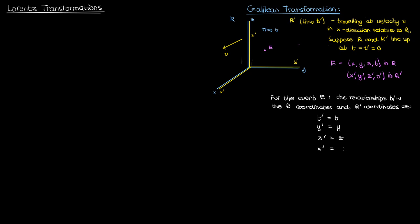The x coordinate of this event however is different between the two reference frames because r' is traveling at a velocity of v in the x direction. So the x' coordinate in the r' frame is going backwards after starting from a point where it was lined up with x, going backwards at the speed v. So we can say that x' equals x minus vt. These four equations comprise the Galilean transformation, which allows us to transform coordinates between two reference frames in a Newtonian mechanics framework.